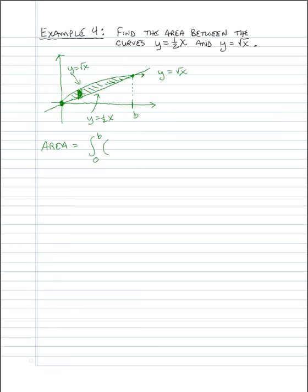We need the x-values of the intersection points. One is clearly x = 0. To find the other, we set the two y-values equal: √x = (1/2)x. We know x = 0 is one solution, but we need the other x-value where they intersect — that's our upper limit b.